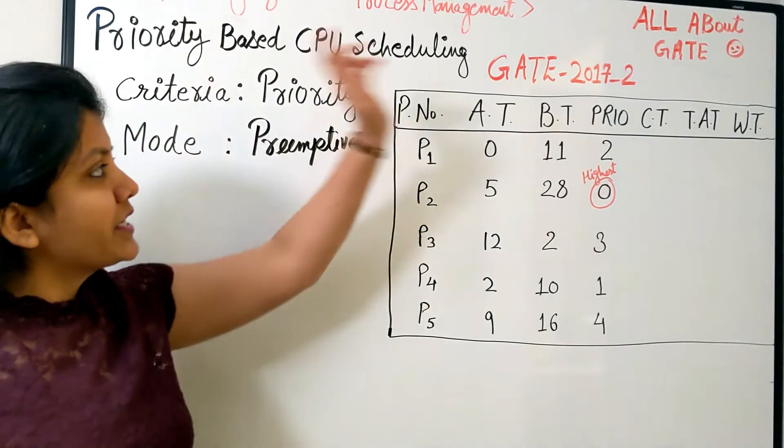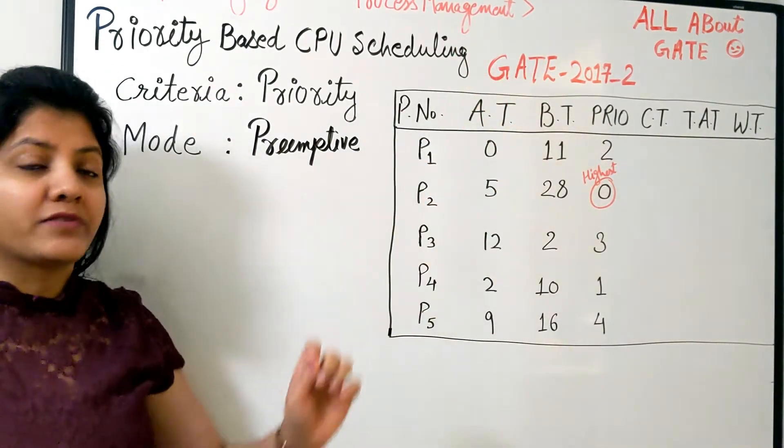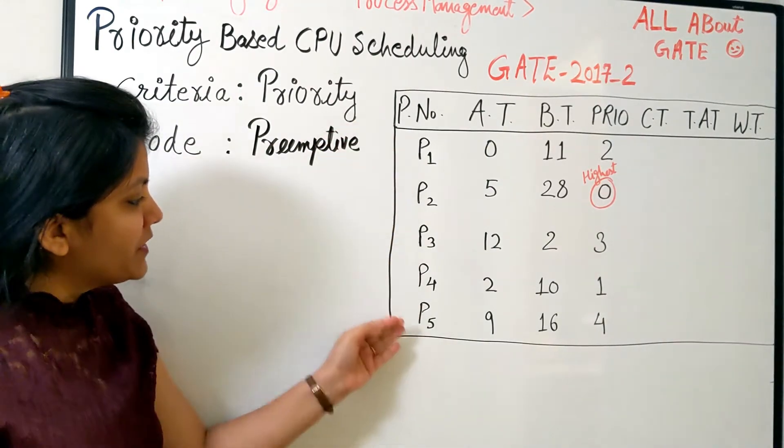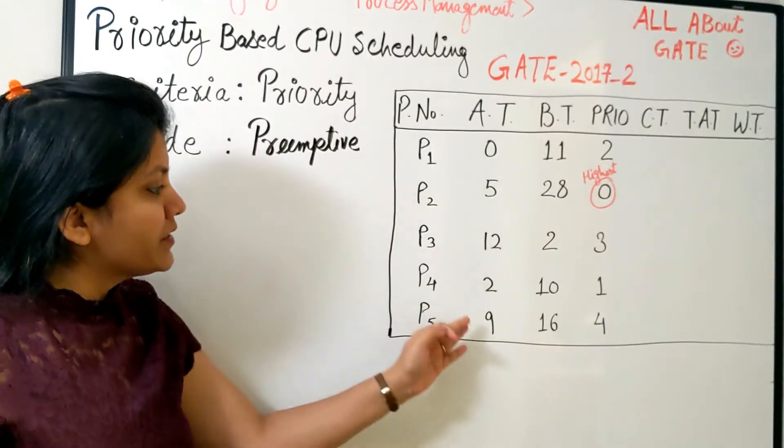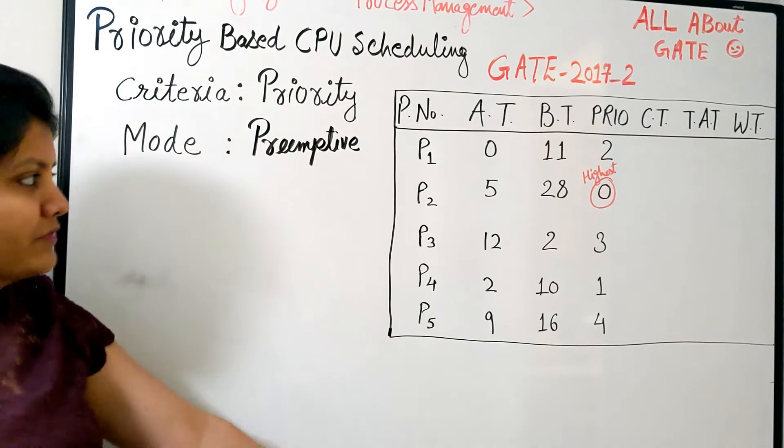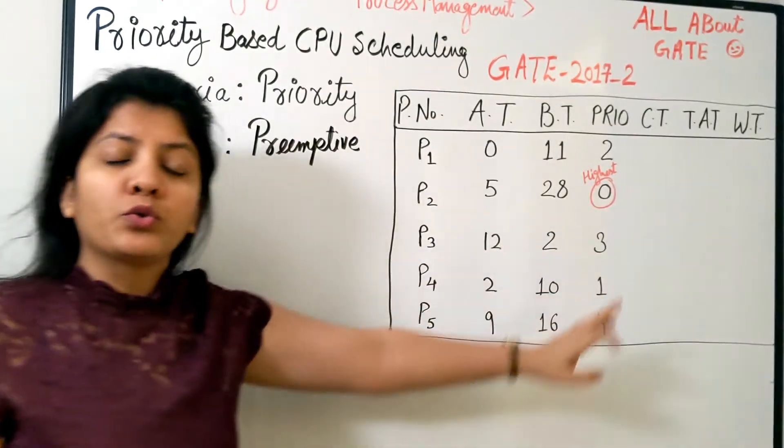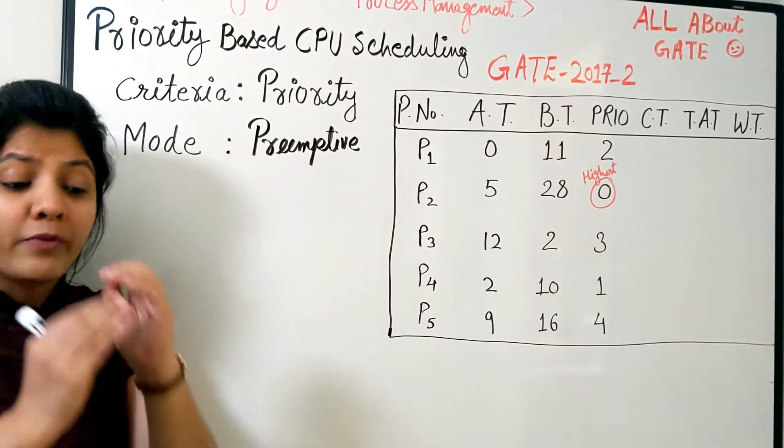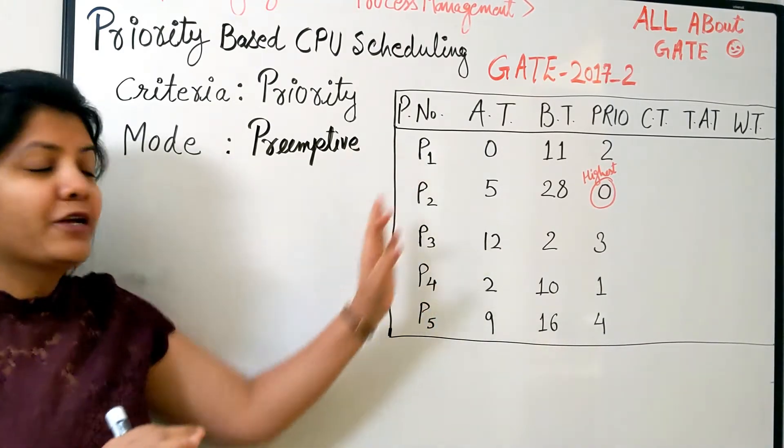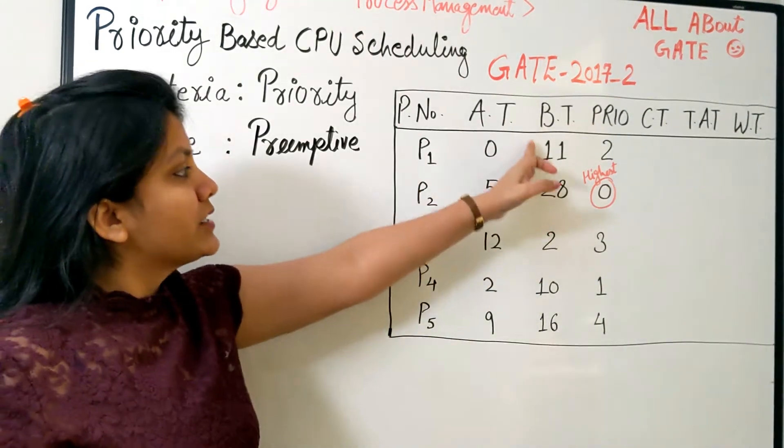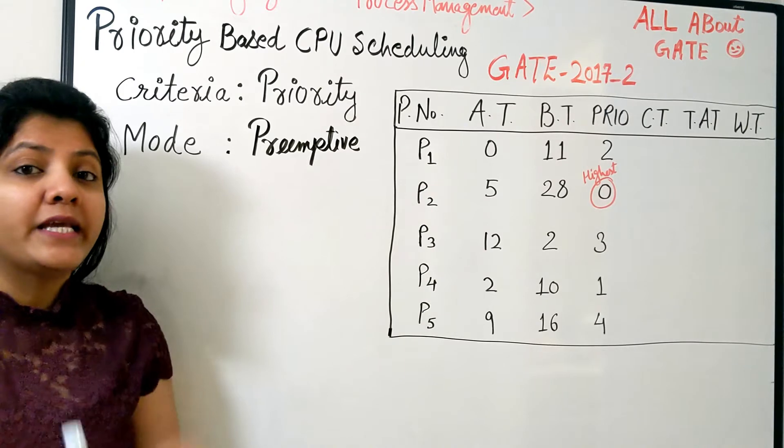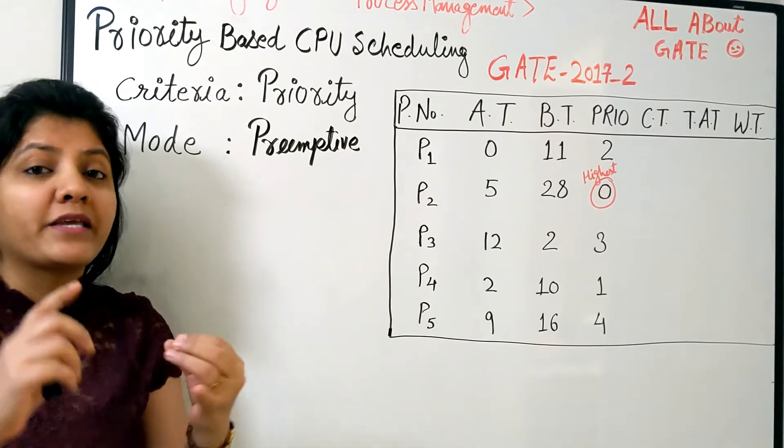For understanding the question, we have taken the GATE 2017 question from set two. The question simply says we have an environment where we have these many processes with their respective arrival times, burst times, and priorities, where zero shows the highest priority. The question explicitly mentions that there is no I/O burst time for any of the processes, which means you just have to consider this burst as the CPU burst.